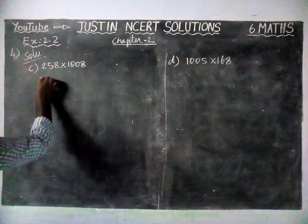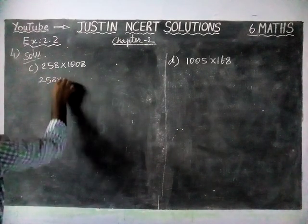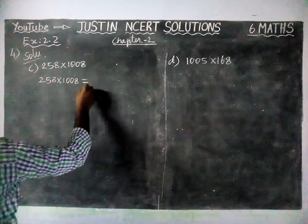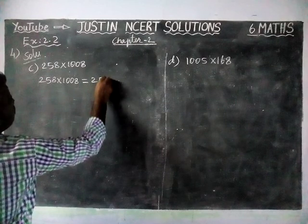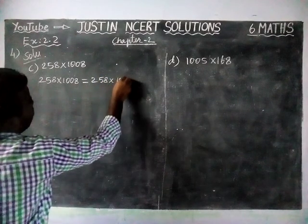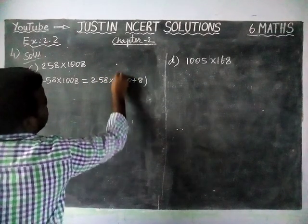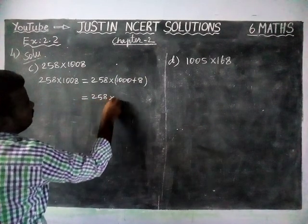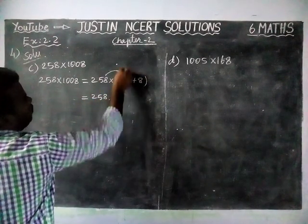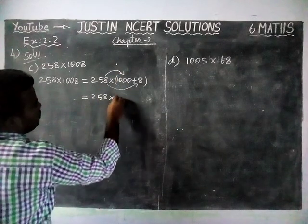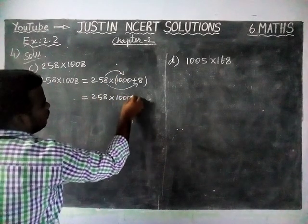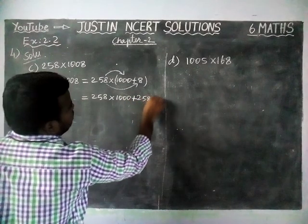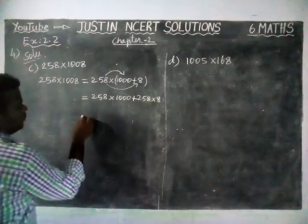Here 258 into 1008 is equal to — we are going to separate this 1008. So 258 into 1000 plus 8 is equal to 258 into 1000, plus 258 into 8. We are going to multiply these two numbers.